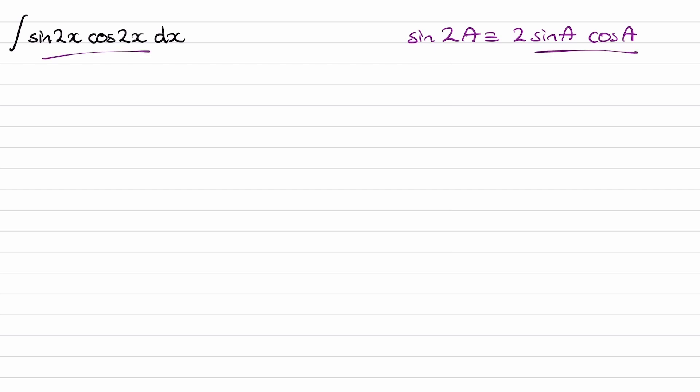This is quite similar to what we have here. The difference is that a is equal to 2x. So if we let a equal to 2x, this becomes sine 4x is equal to 2 sine 2x cos 2x. Divide both sides by 2. And now our right-hand side, sine 2x cos 2x, is exactly what we have over here.